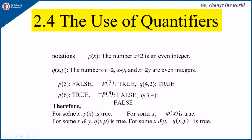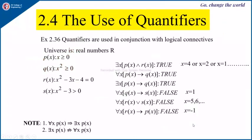What we can observe here is: for some x, p(x) is true, and for some x, negation of p(x) is true. Similarly, for some x and y, q(x, y) is true, and for some x and y, negation of q(x, y) is true. Quantifiers are used in conjunction with logical connectives. Suppose we consider the universe as the real numbers. Then p(x) is x ≥ 0, q(x) is x² ≥ 0.